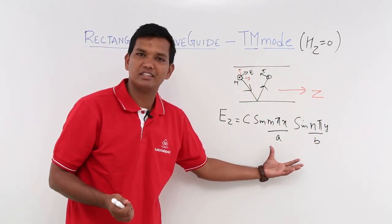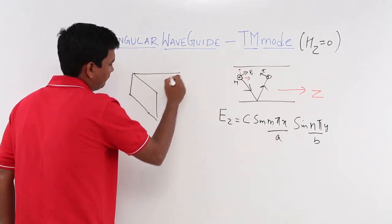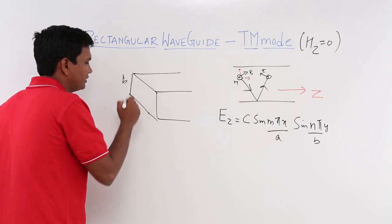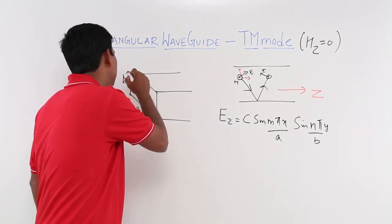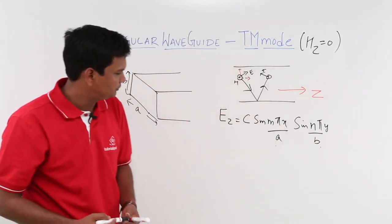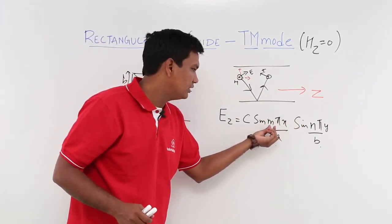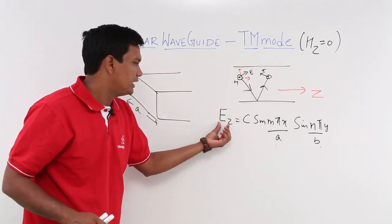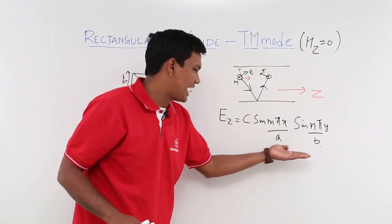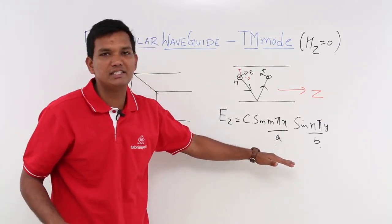Now, somebody can ask from where I have written this equation. Let us understand this. Let us say I have a rectangular waveguide. The length and breadth of the rectangular waveguide is measured by A and B. M stands for modal propagation. We will see what M is later. We know that the electric field in this case will have a component along the Z direction, which I have written. This equation has been derived from the rectangular waveguide. You can derive this equation and find out what the E_Z component will be.